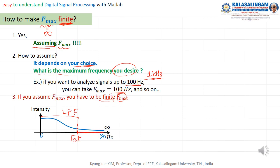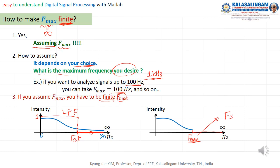Then what we have to do is make F-max finite — not infinite, but finite. Theoretically F-max equals infinite, so how do we make it finite? First, we can assume F-max, and how to assume it depends on your choice. That means what is the maximum frequency you desire. If you desire 100 Hz, you take 100. If one kilohertz, then F-max is one kilohertz. But we also need to actually make F-max finite — how? It is simple: you apply a low-pass filter to the signal, with the cutoff frequency equal to F-max.